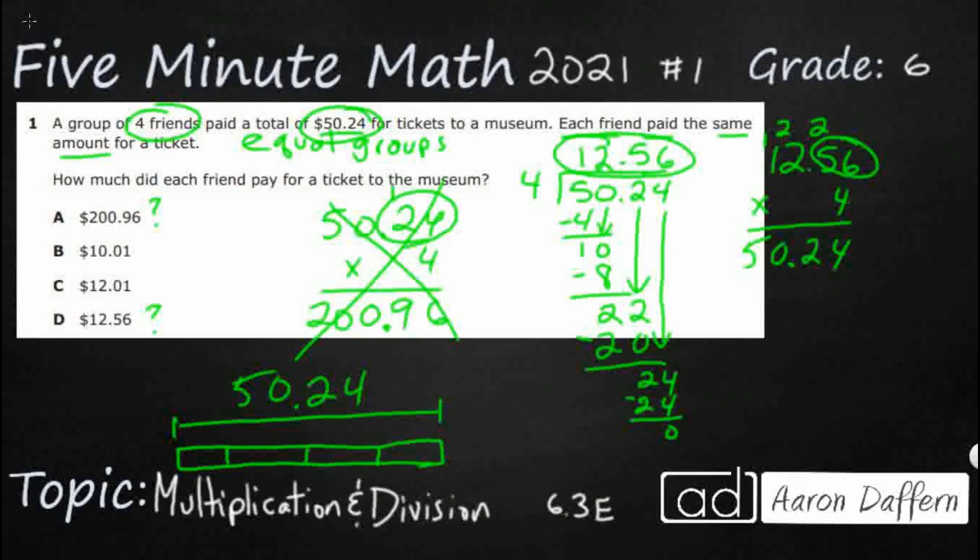What's going to make sense? Each of those friends is 200 bucks, or each of those friends is $12.56? It's that $12.56 that's going to make sense. That's my answer, D.